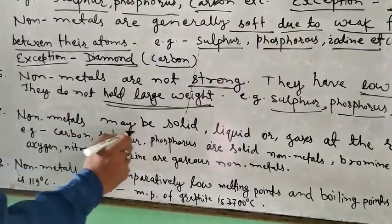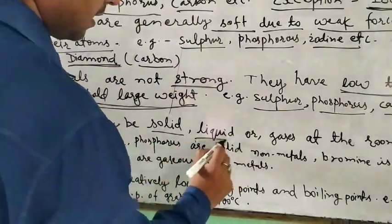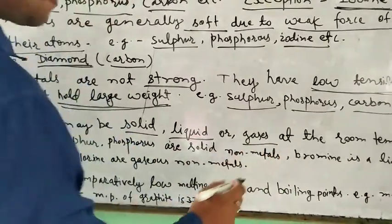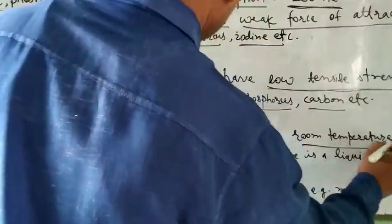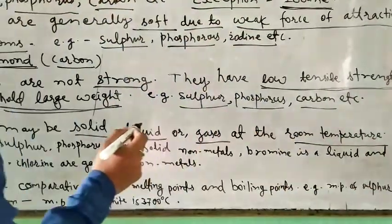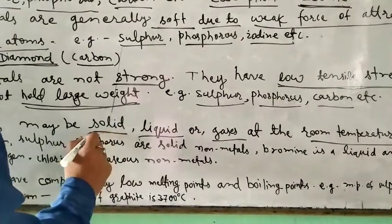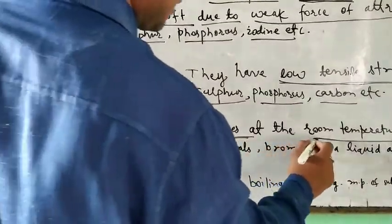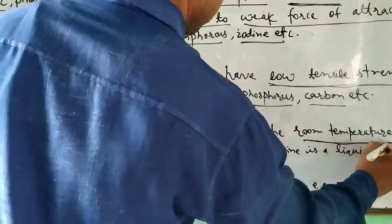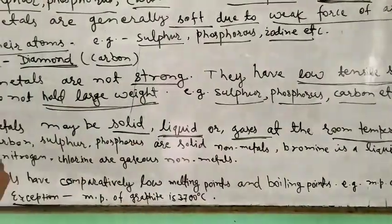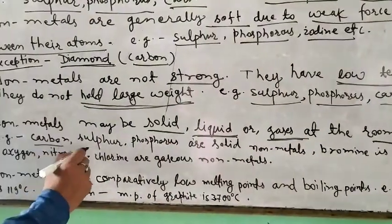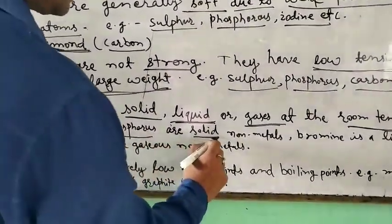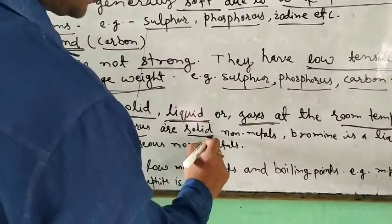Another property is that non-metals may be solid, liquid, or gases at room temperature. For example, carbon, sulfur, and phosphorus are solids at room temperature.